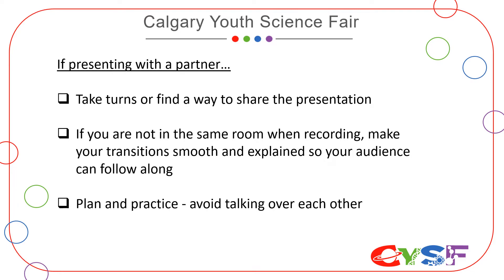Here are a few tips that you can use if you're presenting with a partner. First of all, make sure that you find a way to share the content equally. This might mean one of you presents the first half of the project and the other one presents the second half, or you can take turns and alternate throughout the presentation. Make sure that you avoid talking over each other and practice first so that you know who's going to be talking about what parts. If you're not presenting in the same room together, make sure your transitions are done well and smoothly so that the viewers can follow along.